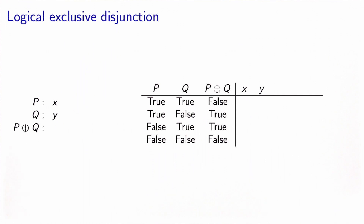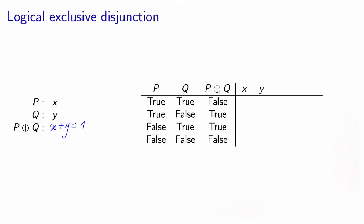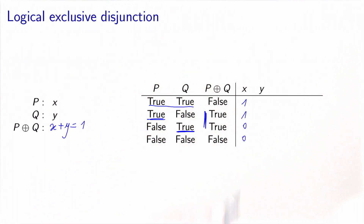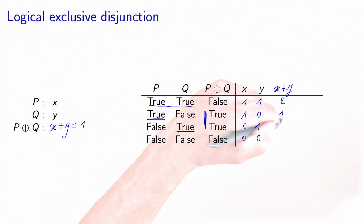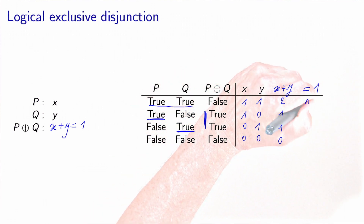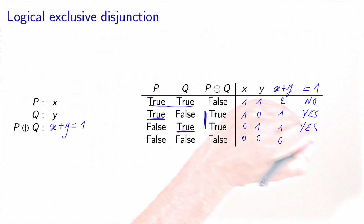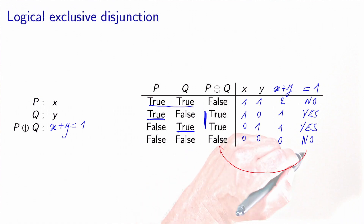The next one is the exclusive disjunction. We have a clause p and a clause q. The exclusive disjunction is when one of them is true, but not both. If p is represented by binary variable x and q by binary variable y, the exclusive disjunction is modeled by the condition x plus y equals 1. The exclusive disjunction is true when one of the two clauses is true but not both. x plus y gives: two, one, one, zero. Is it equal to one? No, yes, yes, no. The two columns indeed coincide.